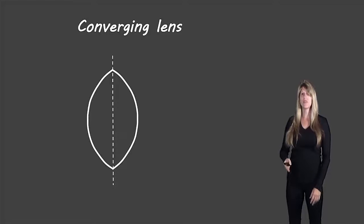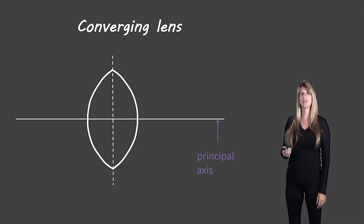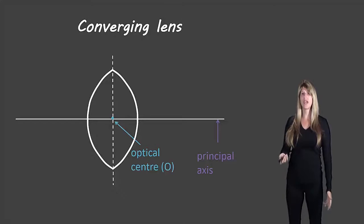Going straight through the lens we have the normal and going perpendicular to the normal we have what we call the principal axis. Principal axis and the normal meet at 90 degrees so they're perpendicular to each other and where they meet is called the optical center and we give that the symbol O.